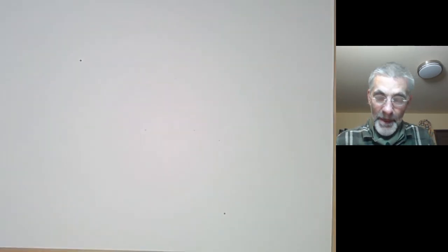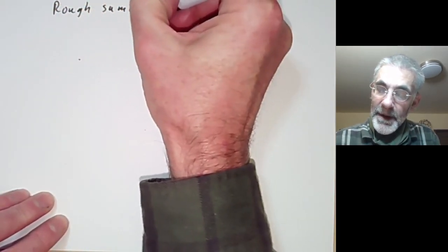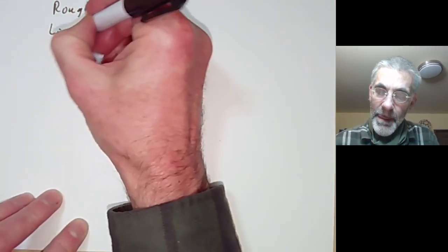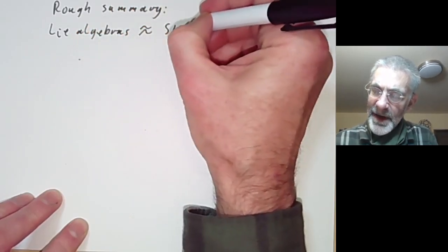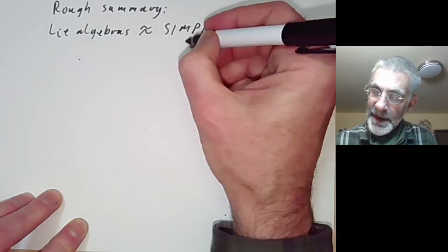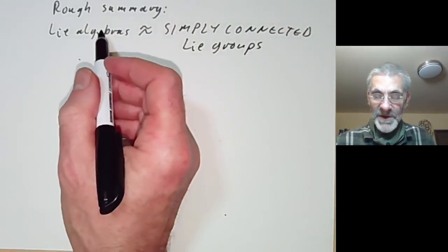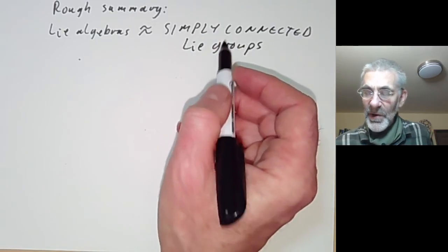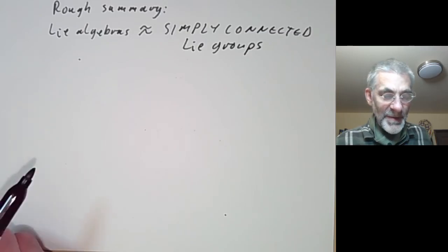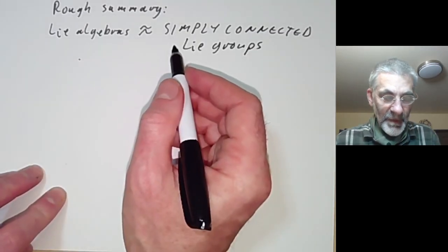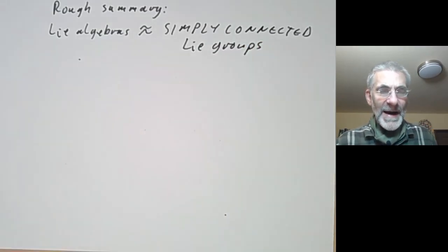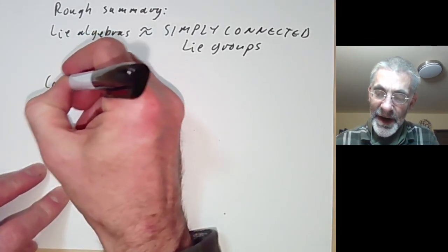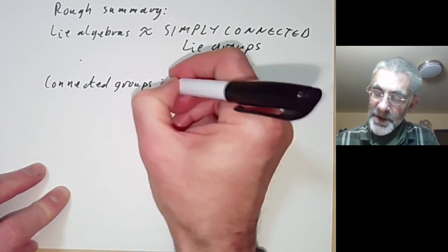So let's have a summary. We've seen that Lie algebras don't quite correspond to Lie groups because of the various problems. However, Lie algebras are very similar to simply connected Lie groups. Most of the problems that arose were related to the fact that the group was either not connected or not simply connected. So what we're going to do is say a little bit about the relation between Lie groups and simply connected Lie groups. If the group isn't connected then the group of components can be any discrete group and we can't really say much about that, so we're really going to compare connected groups to simply connected groups.